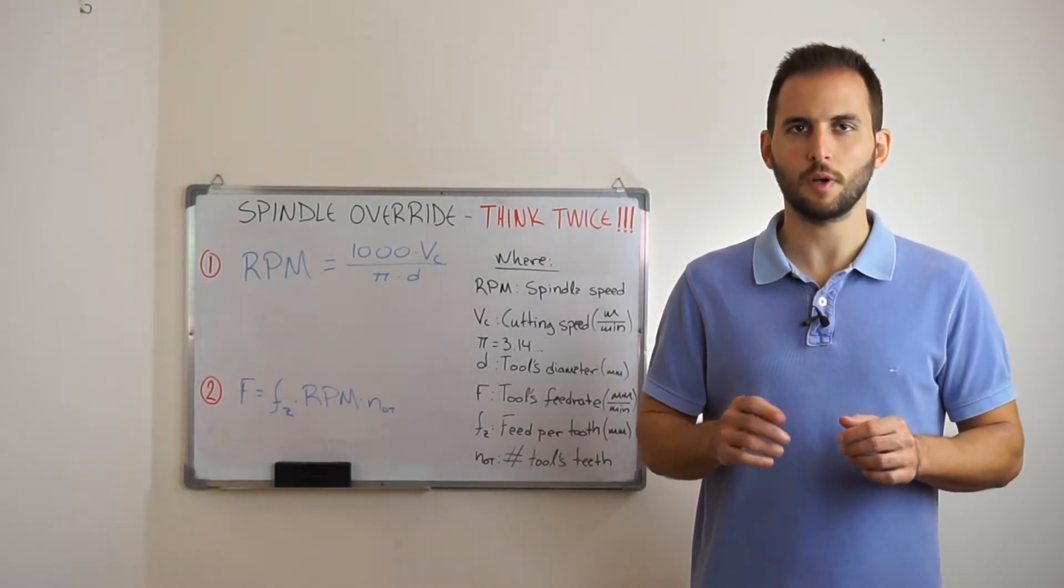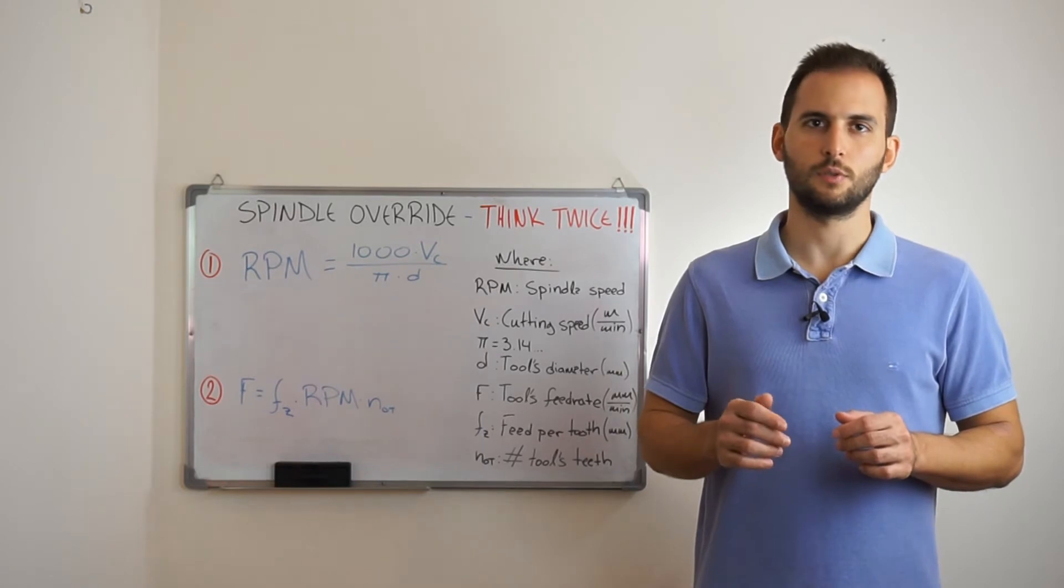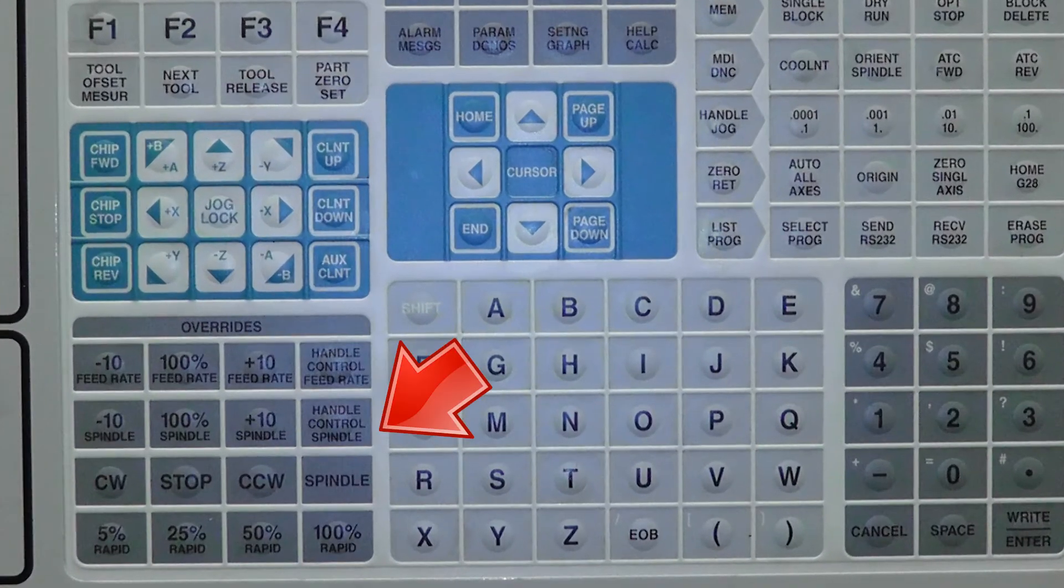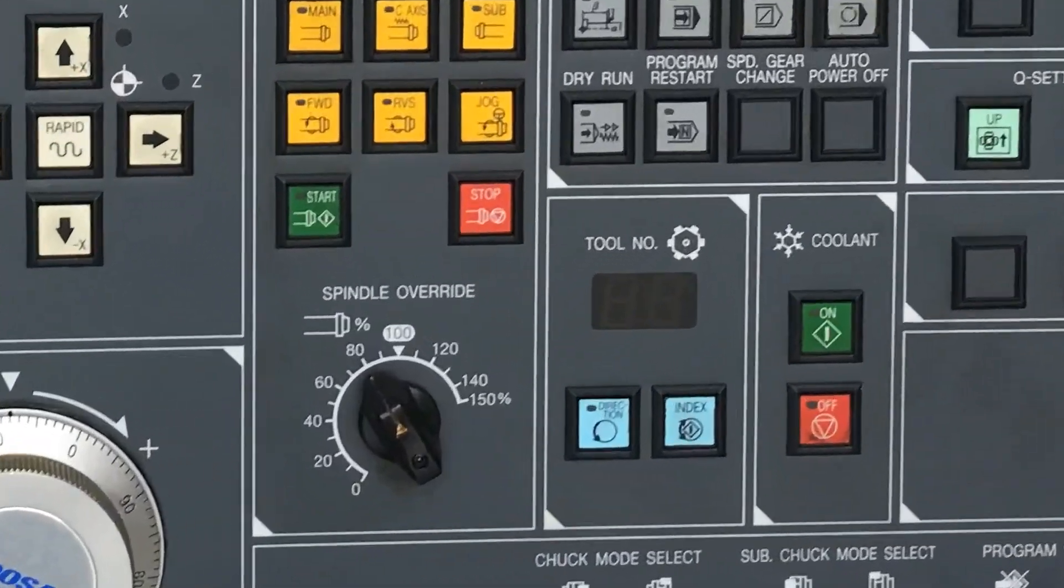Note that in order to override the spindle speed we have to adjust the relevant option of the controller, usually by pressing a button or by turning a knob.